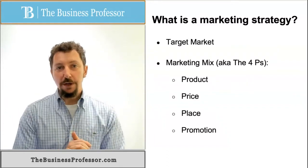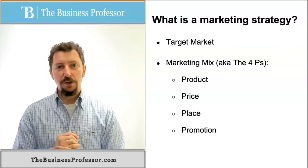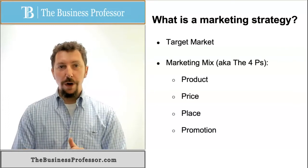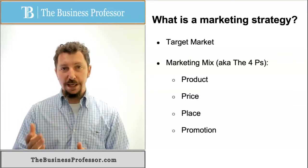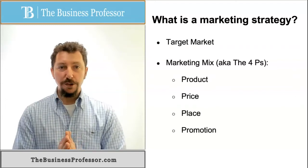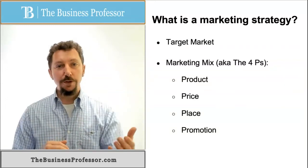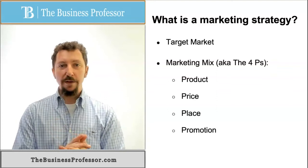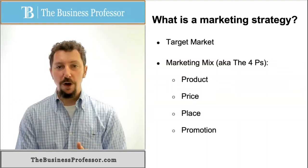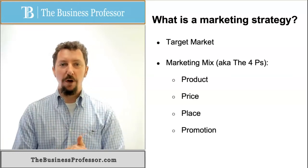Then we have to figure out place — another term for that is distribution. The key here is to make the product available where customers can get it and use it effectively. Lastly, we have promotion, and that's how we communicate to the target market what we have to offer, where they can get it, and how much it will cost. All of that together makes up our marketing strategy.